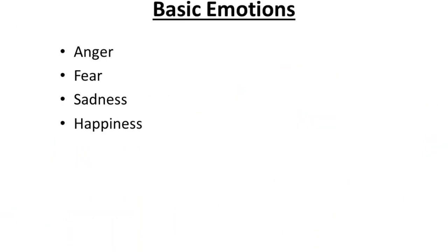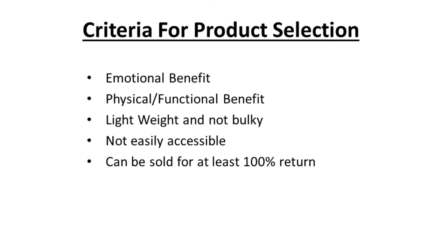Always look for products that appeal to people's emotions or provide physical or functional benefits. Sell products that provide real life solutions — real life problems mean someone needs an emotional or physical/functional solution. People don't care how a product looks; they only care what the product is going to do for them. If a product does not provide an emotional or physical/functional benefit, pass on it. I hope this guides your product selection — use the product research module and remember these criteria.